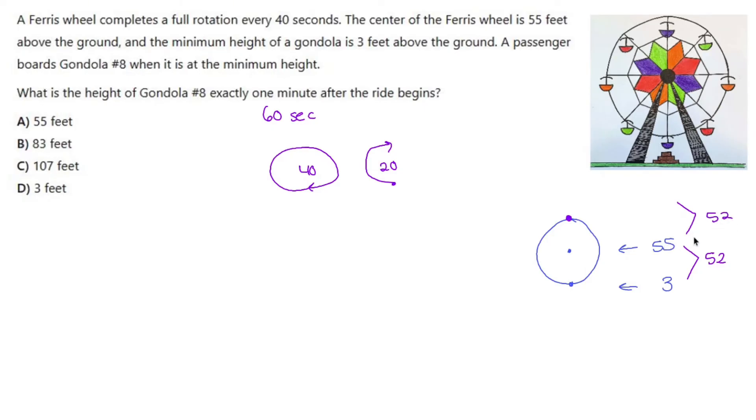55 plus 52 is 107. So the maximum height of this ferris wheel is where you're going to be after 60 seconds, and that's going to be at 107 feet. Fun stuff!